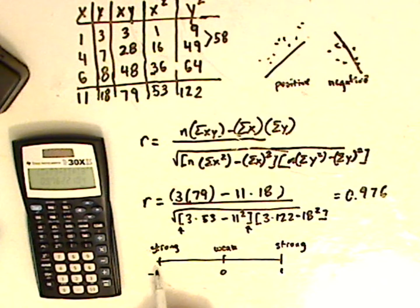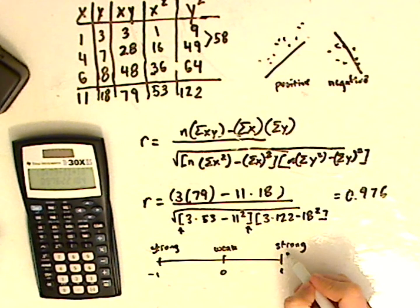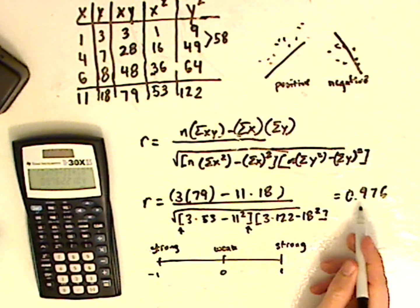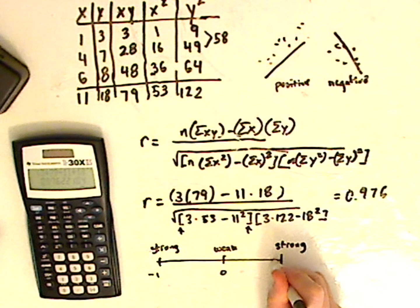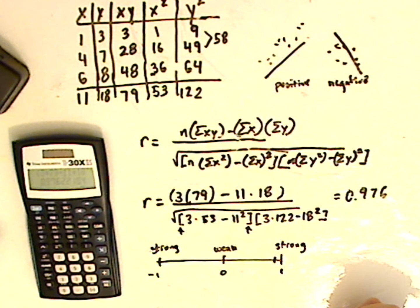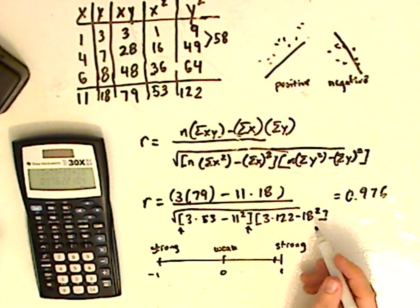So this would be a strong negative linear relationship, which means it's just decreasing from left to right. And this would be a strong positive linear relationship. Since it's 0.976, it's right there. It's really strong. And it's a strong positive linear relationship.